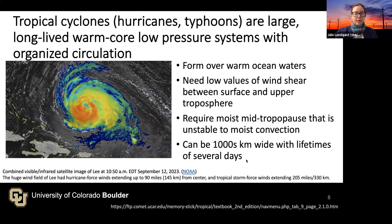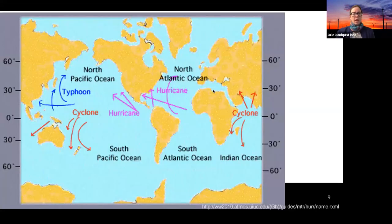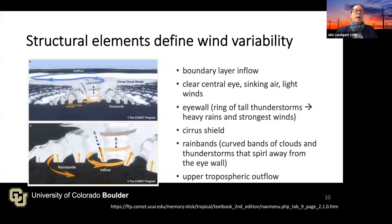These are huge storms — they can be thousands of kilometers wide and can last several days to weeks. Hurricane Lee, for example, had hurricane-force wind fields extending almost 150 kilometers out from the eye, and tropical storm force winds extending 330 kilometers out. Typhoons, cyclones, and hurricanes are all the same physical process, just named differently depending on what part of the world they occur in.